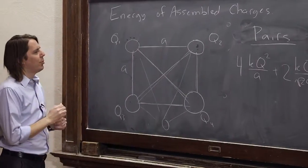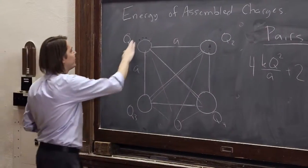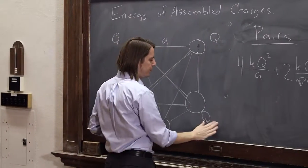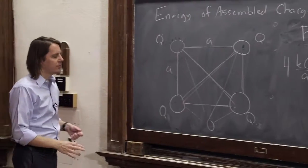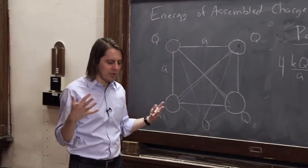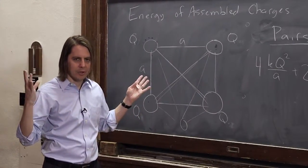So what if we said, okay, it is symmetric, all the charges are the same, they're all Q, they're sitting on a square, you did all that work to bring them together, now release them all at the same time. What's going to happen?